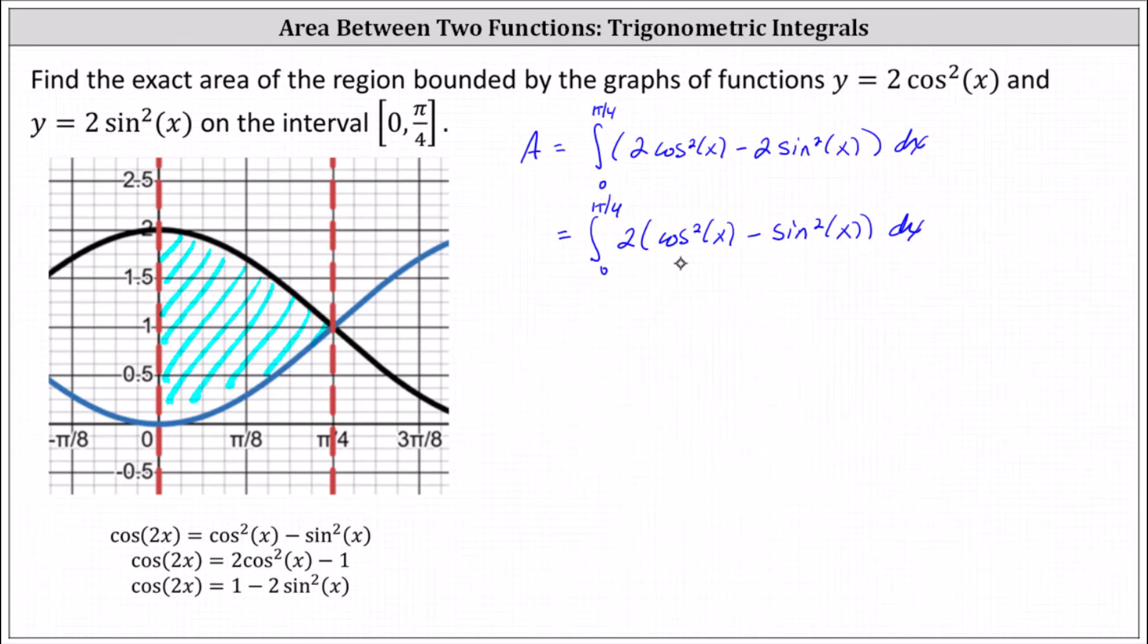From here, we need to perform a substitution. Recall that cos(2x) = cos²(x) - sin²(x). Performing this substitution, the area equals the integral from 0 to π/4 of 2cos(2x) dx.